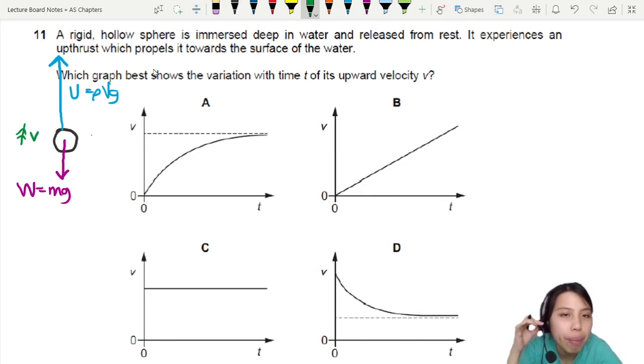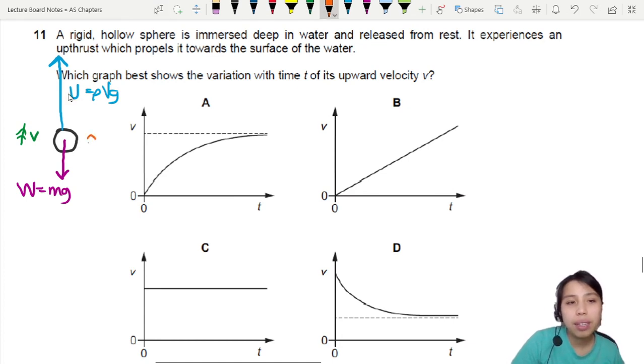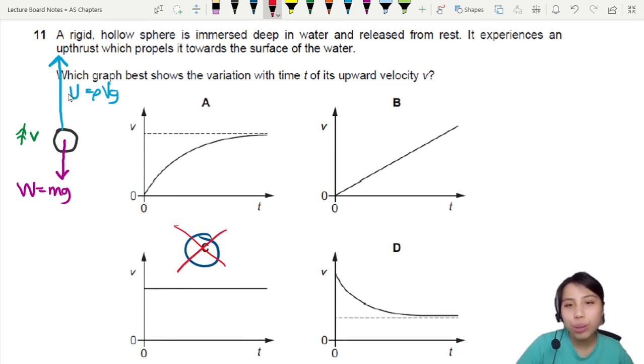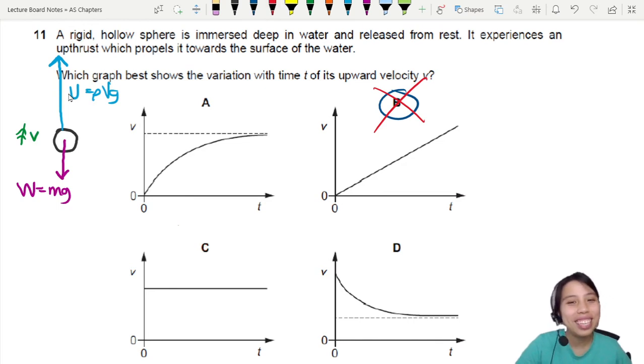So which graph best shows the variation with time t of the upwards velocity? So if we look at this all, there is an upwards net force. Shouldn't this thing be accelerating upwards as well? Constantly? Yes, but don't choose this answer because this answer is wrong. Don't choose this v answer because this answer is also wrong. Yes, there's acceleration, but the acceleration is not constant.